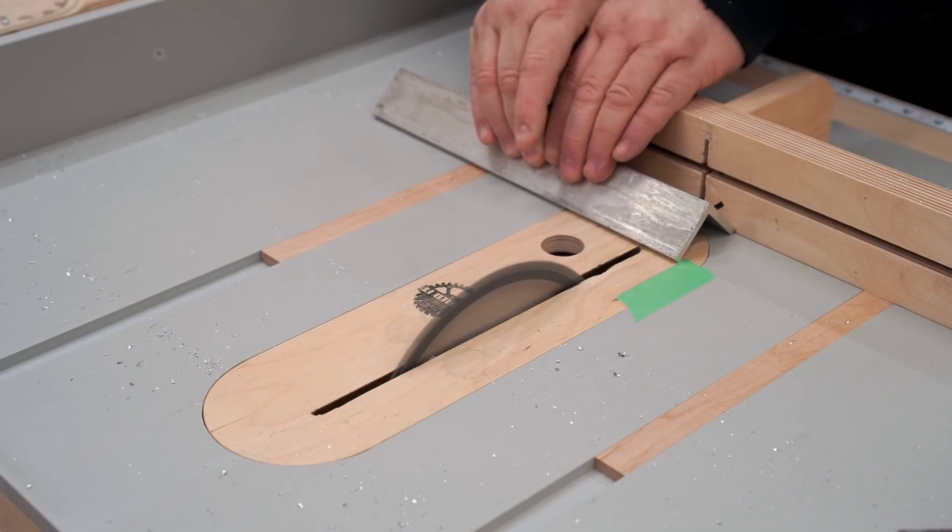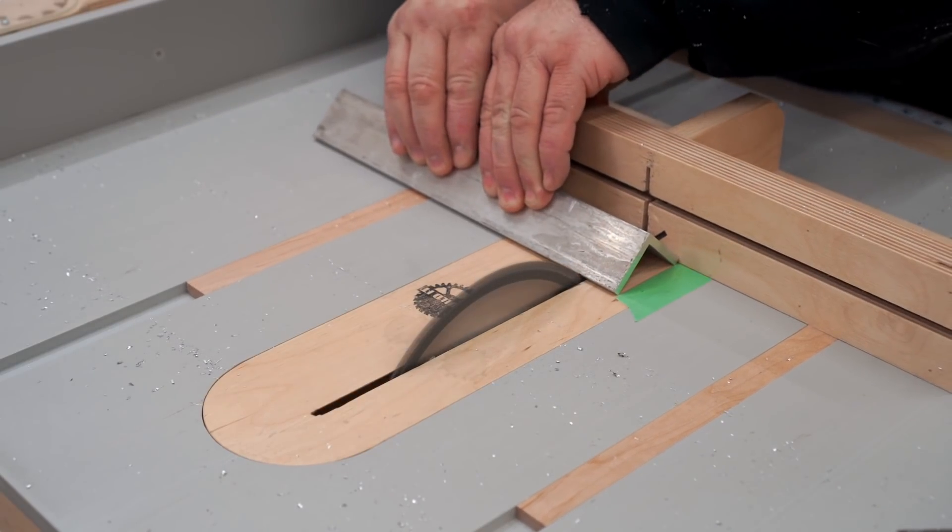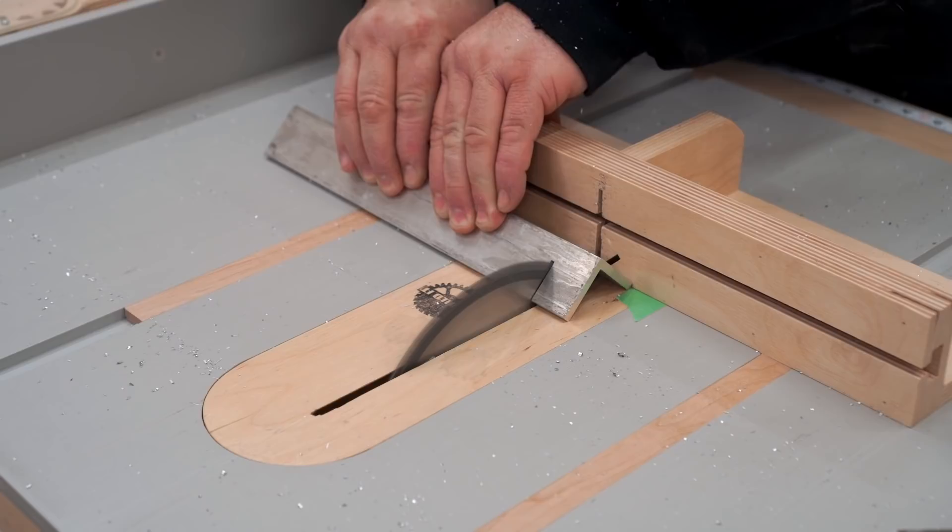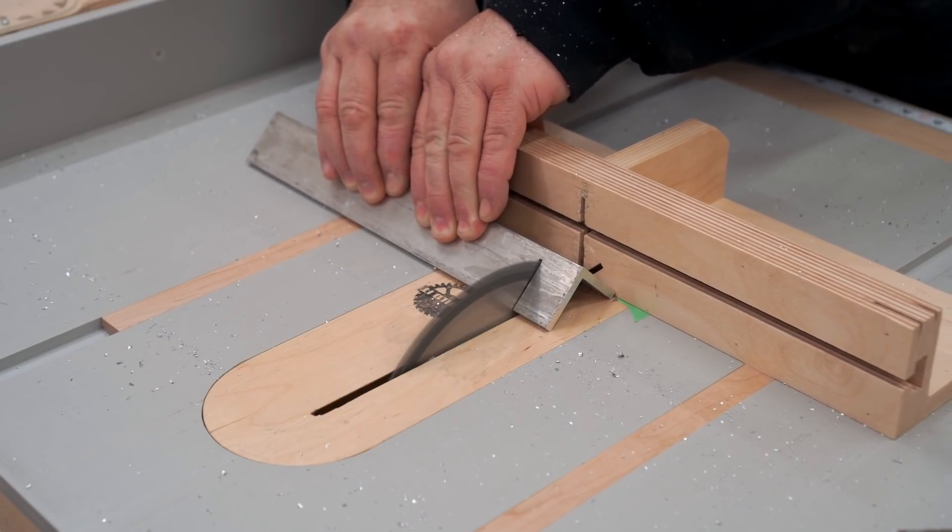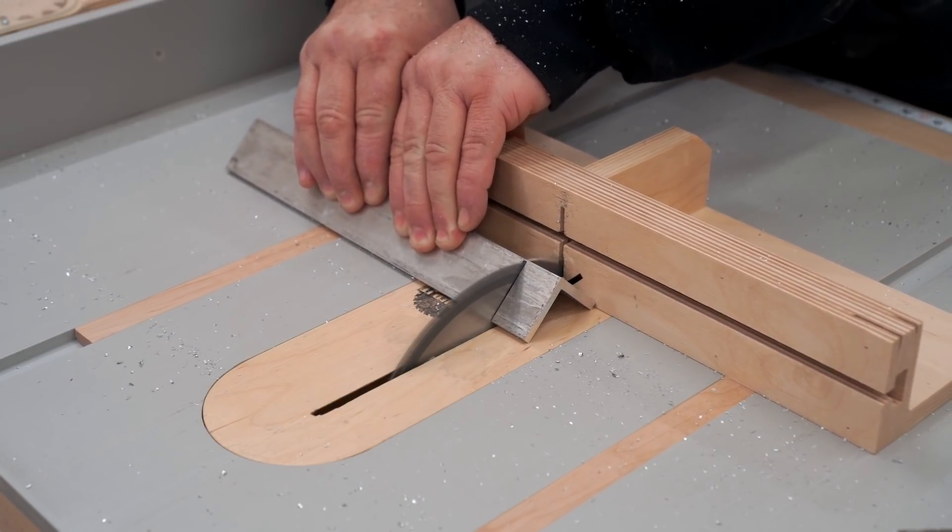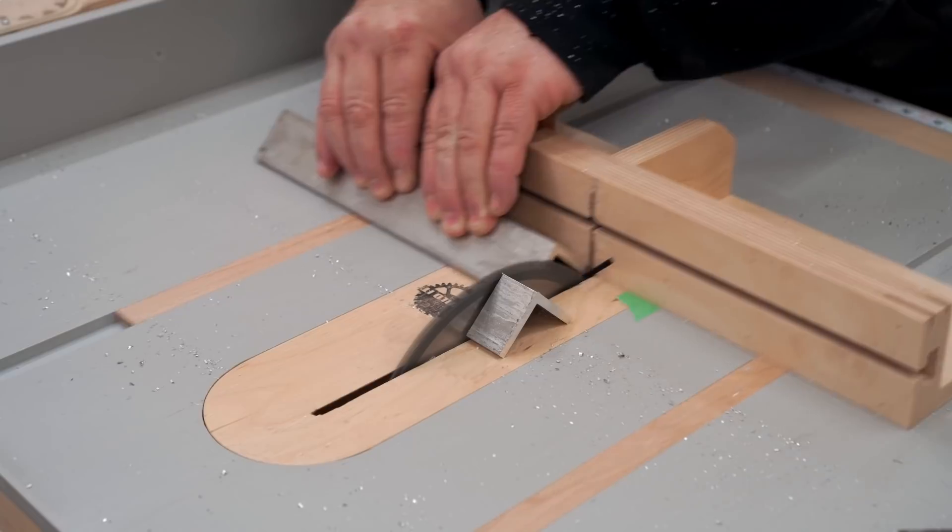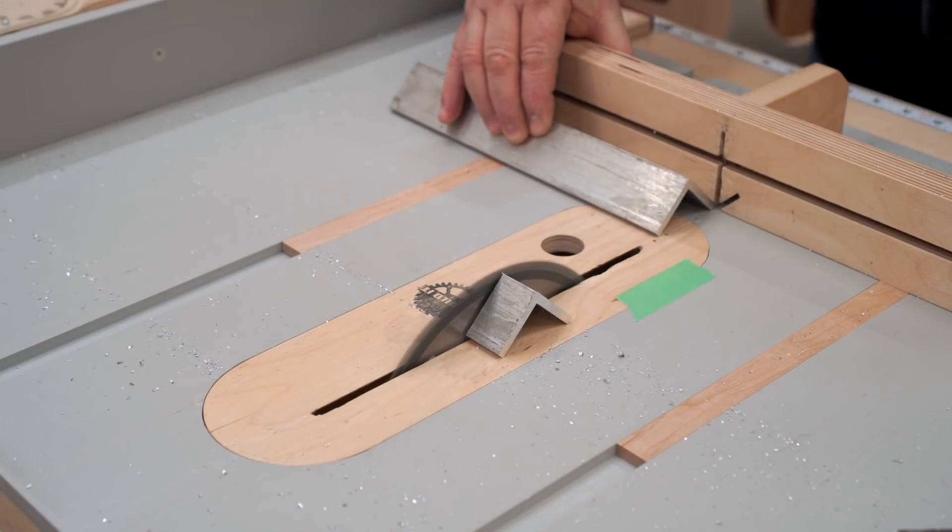I think the takeaway from this should be that whatever respect that you're paying to wood while you're working with that, cutting that, you should probably double it plus some for aluminum when you're trying to use these same tools to work with that.